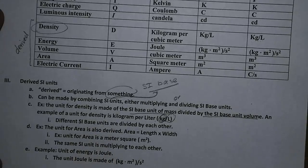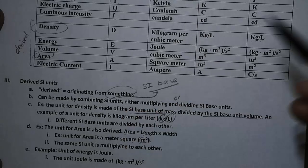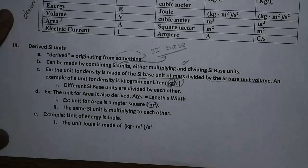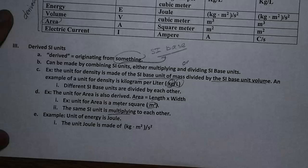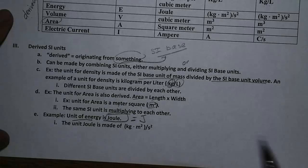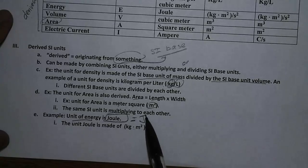Let's look at another example: area. The unit for area is also derived. We know that area equals length times width, and an example unit for area is meter squared. Since meter is the SI unit for distance, meter times meter gives us meter squared — so the same SI unit can be multiplied by itself to generate a derived SI unit. Sometimes we have a very complicated derived SI unit, like the unit of energy, which is the Joule, represented by J. But the dimension of Joule is actually kilogram times meter squared over second squared. So don't be tricked by a single letter — always look at the dimension of a derived unit.